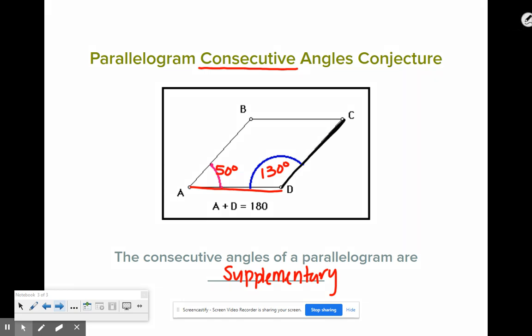We could kind of work our way around the parallelogram. And I'm talking about D and C here. They're also consecutive. So that would mean C would have to be 50. Also going around. But that also goes with our opposite angles conjecture that we just talked about. So if we know two angles, we know all of the angles.